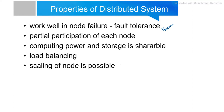Fault tolerance is a key feature of distributed systems. There is partial participation of each node — each individual unit has its own memory and storage, so they participate partially for computational purposes. Computing power and storage are shareable, shared internally through buses.